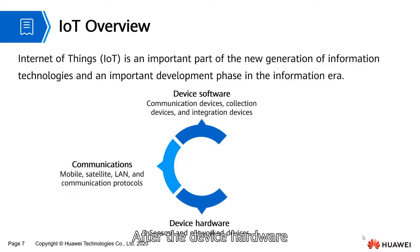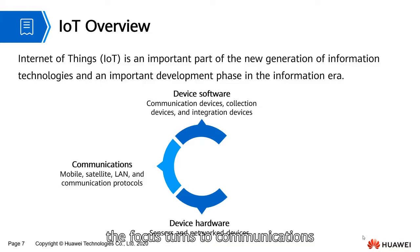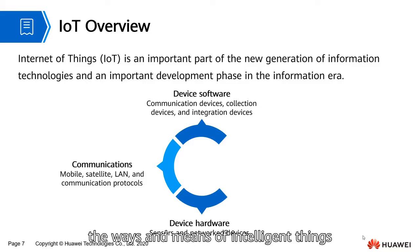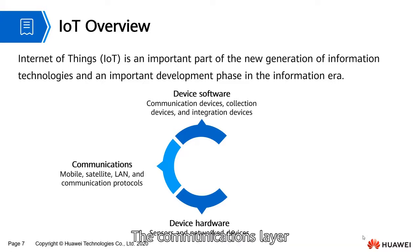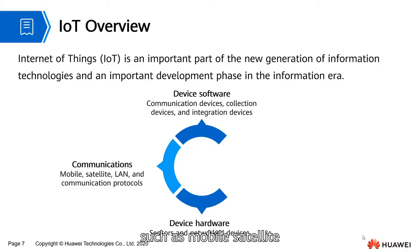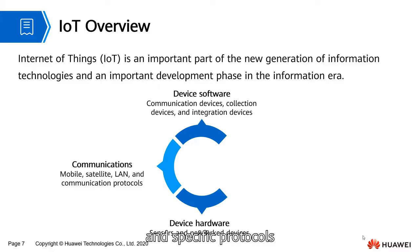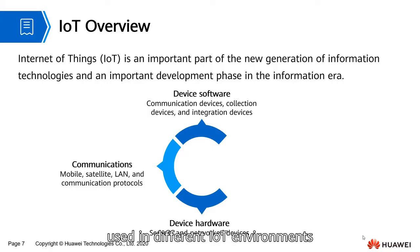After device hardware and software are in place, the focus turns to communications — the ways and means of intelligent things exchanging information with the IoT world. The communications layer includes physical connection solutions such as mobile, satellite, and local area networks, and specific protocols such as CoAP, MQTT, and LWM2M used in different IoT environments.